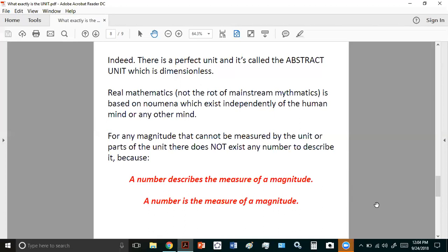Because a number describes the measure of a magnitude or a number is the measure of a magnitude. So for example, pi, square root 2, e, etc. Those are not magnitudes which have numbers to describe them. There is no number describing pi or square root 2, etc.